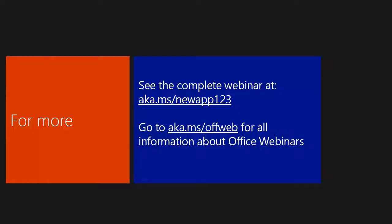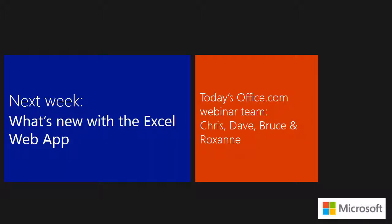The Office Web Apps — online versions of Word, Excel, PowerPoint, and OneNote — are absolutely free to use. You just need an updated browser and an internet connection. You don't need to have Office, and you don't need to worry about which version people have because there's only one version, updated constantly. Next week we'll be talking about the Excel Web App, which also has brand new improvements. Links to the web apps and the video for this will be up at aka.ms/newapp123. For the Office Webinar series go to aka.ms/offweb. Thank you for joining today's Office 15-minute webinar.